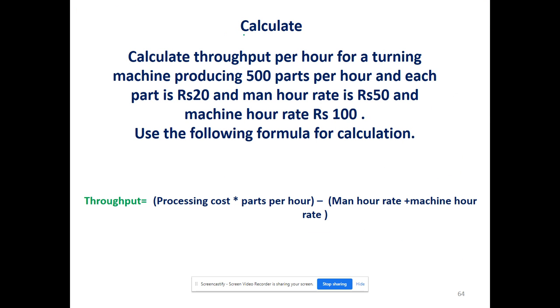This is an example calculation for you. Calculate throughput per hour for a turning machine producing 500 parts per hour. Each part is 20 rupees, man hour rate is 50 rupees, and machine hour rate is 100 rupees. Use the following formula for calculation and determine whether the turning machine is producing the right throughput or not.